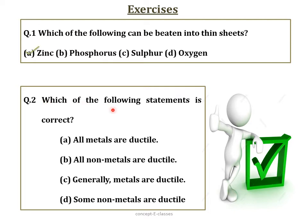Question number two: which of the following statements is correct? Are all metals ductile? No — there are metals like mercury which are liquid at room temperature. Are all non-metals ductile? No, non-metals are not ductile at all. Are some non-metals ductile? No. So the correct answer is: generally, metals are ductile.